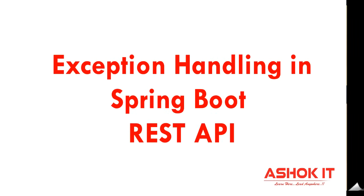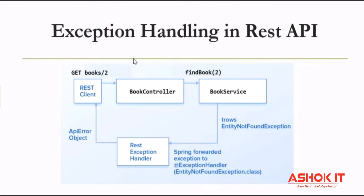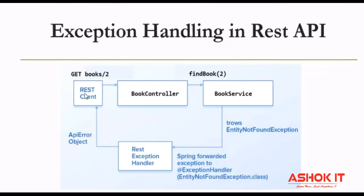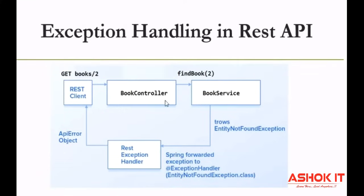Hello everyone. In this video we are going to understand how to implement exception handling in Spring Boot REST API. I'm going to take one REST API application where the REST controller handles request and response, and the service contains the business logic. When a request comes in with a given ID, if the record is available it will return data; if not, it will throw an exception. We are going to learn how to handle that exception and convey the information to the client in a meaningful way.